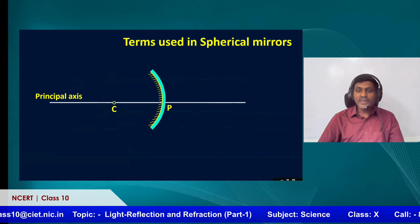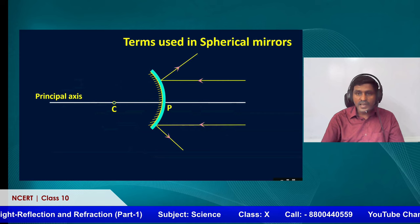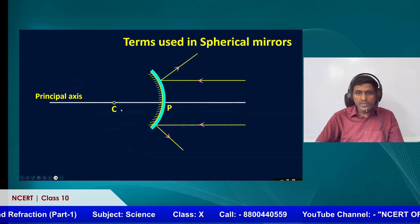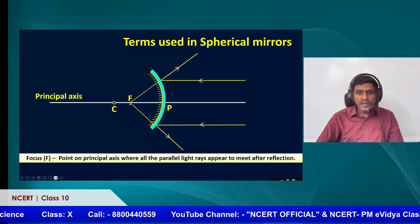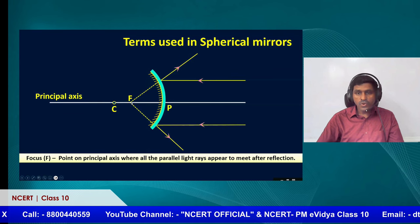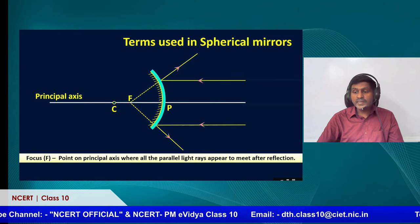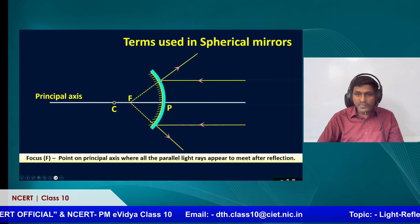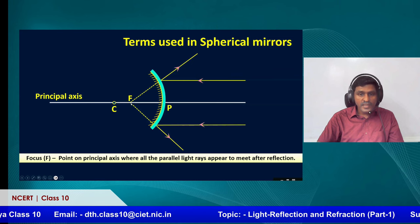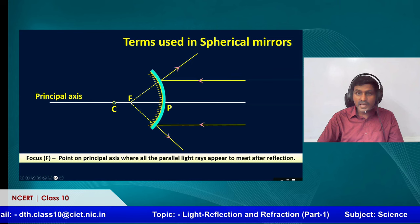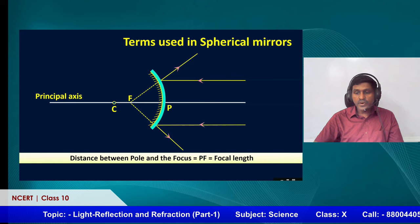For a convex mirror, if a parallel ray falls on the convex surface, it will diverge after reflection. If we extend the reflected rays, they appear to meet at a point — this is the focus for a convex mirror. After reflection, if you extend the lines, they appear to meet at point F, which is called the principal focus. The distance between the pole and the focus is called the focal length.